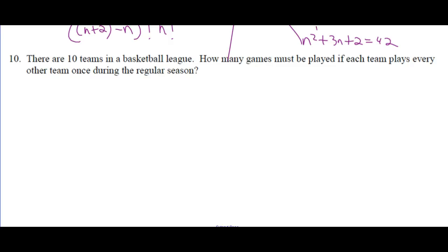Ten teams in a basketball league — how many games must be played if each team plays every other team once? We're just pairing them up: 10C2 = 45. What if they played home and away? Then order matters — AB is different from BA — so it's 10P2. Stamps versus Riders is one game if they play once, but two if home and away. So 10C2 = 10×9/2 = 45.